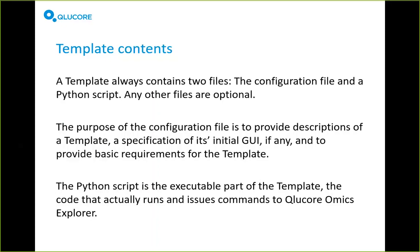The configuration file sets the template up so that the software knows what it's named, has a description, and also tells the software things about the template — such as whether or not the template requires a dataset. You can write templates that don't require a dataset and templates that do. The configuration file also contains descriptions of the initial user interface that's shown when the template starts up, which is shown before the Python script starts executing.